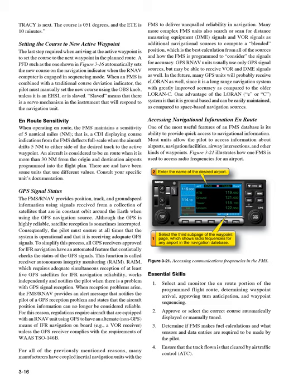For all of the previously mentioned reasons, many manufacturers have coupled inertial navigation units with the FMS to deliver unequaled reliability and navigation. Many more complex FMS units also search or scan for DME signals and VOR signals as additional navigational sources to compute a blended position — which is the best calculation from all of the sources — based on how the FMS is programmed to consider the signals for accuracy. GPS RNAV units usually use only GPS signal sources, but may be able to receive VOR and DME signals as well.